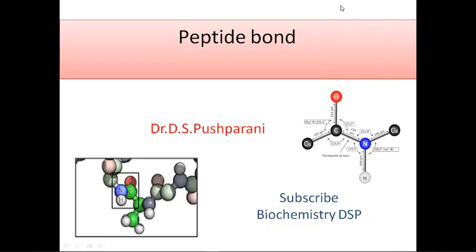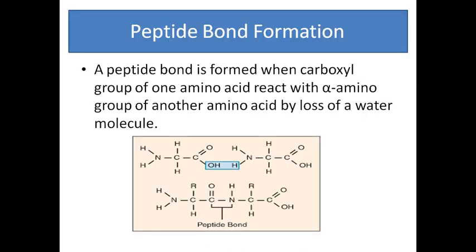Welcome. In today's session we will be seeing about peptide bond — how it is formed, what are the characteristics and nature of peptide bond, and how to write a peptide bond. A bond which is formed between two amino acids is said to be a peptide bond. When two amino acids join together it results in a bond called peptide bond.